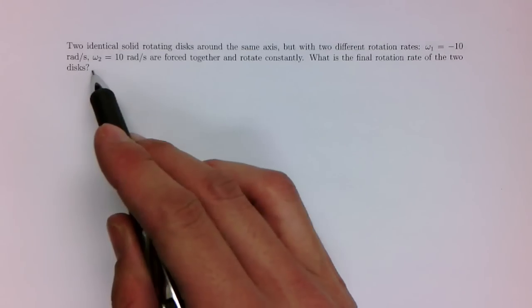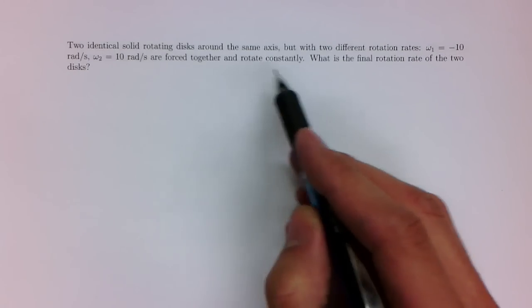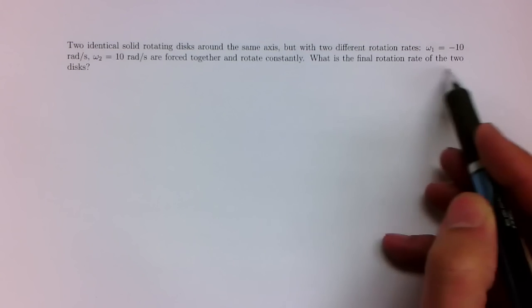Omega 1 equals minus 10 radians per second. Omega 2 equals 10 radians per second. We'll force together and rotate constantly. What is the final rotation rate of the two discs?